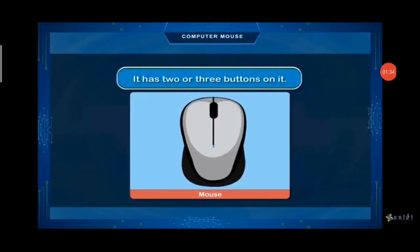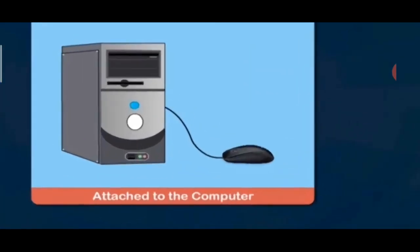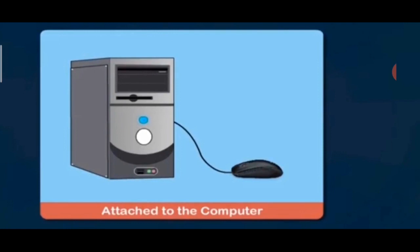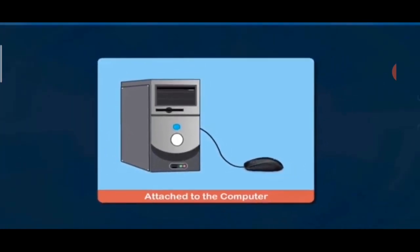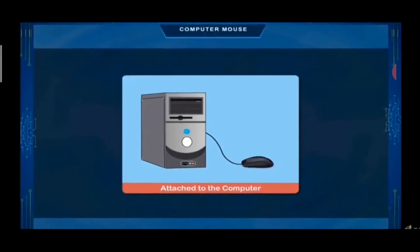A computer mouse has 2 to 3 buttons — basically a left button and a right mouse button. It is also having a wire, which is attached to the CPU box, so that we can move our mouse and our cursor will move on the screen.